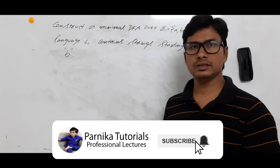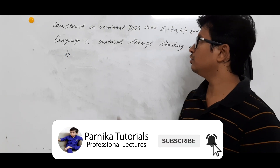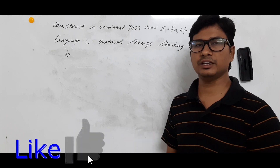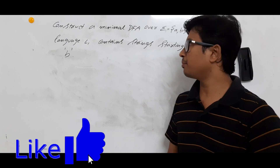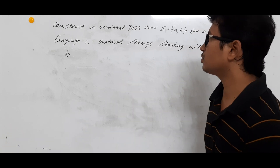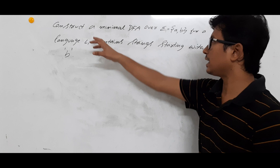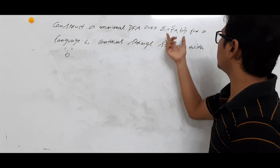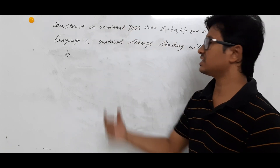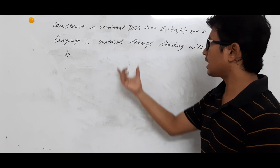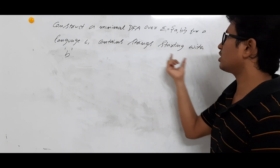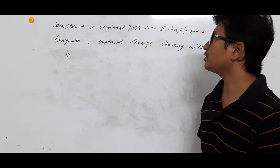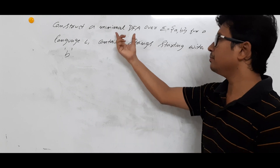Good morning friends. In this video we will discuss another example for constructing the DFA for better understanding. The question is: construct the minimal DFA over alphabets for language L1 which contains strings starting with B. There is a new term here — minimal DFA.